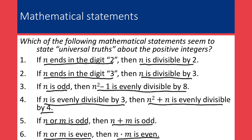From the class discussion, we decided that the statements circled in red were false, and the statements circled in green were true. So there are three false statements and three true statements.